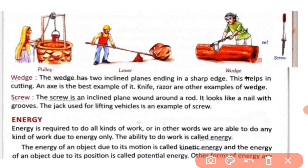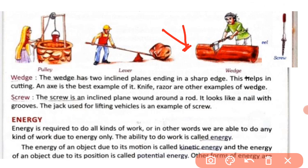Next is the wedge. The wedge has two inclined planes ending in a sharp edge, which helps in cutting. An axe is the best example of a wedge. Other examples include knife and razor.